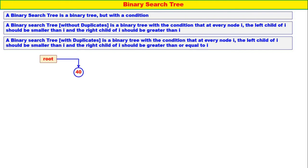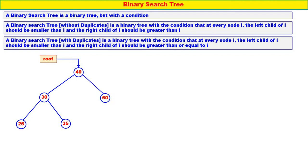Now let us consider 40. Left node of 40 is 30. Left node of 30 is 25. Right node of 30 is 35 — it is greater than 30 and less than 40. 60 is proper. 50 — it is less than 60 and greater than 40.